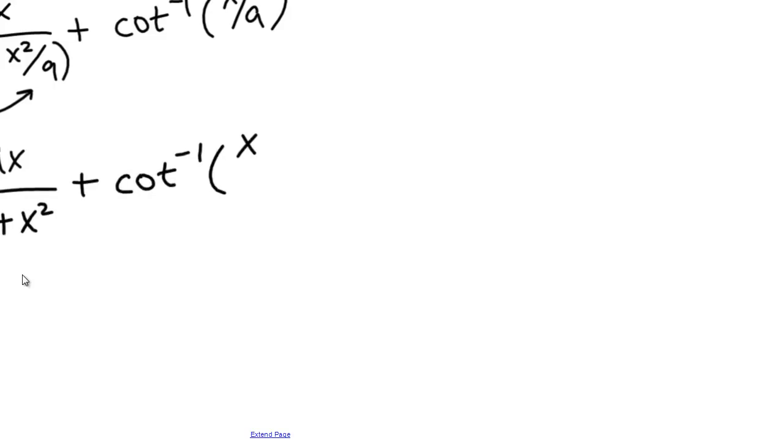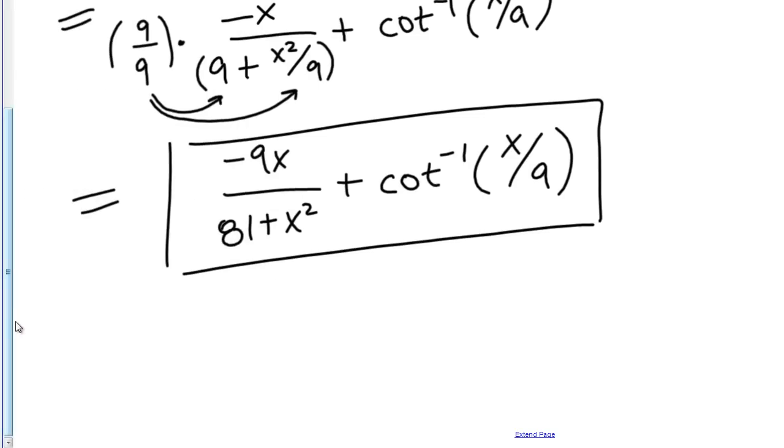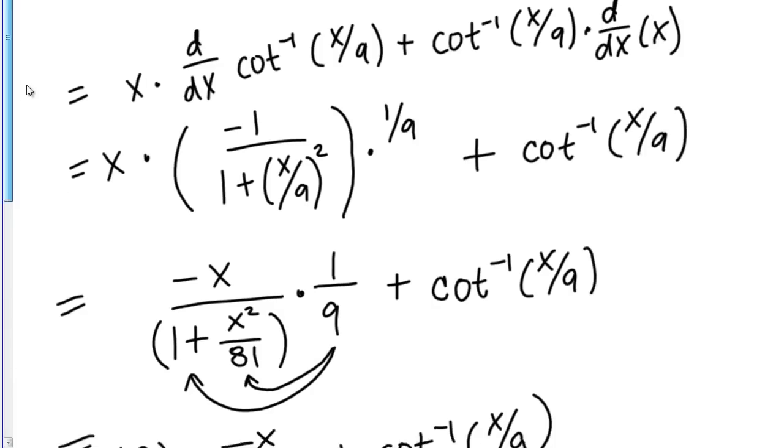This answer is a little nicer, but the main point of this exercise is of course taking the derivative of the cotangent, and particularly using the chain rule while doing so.